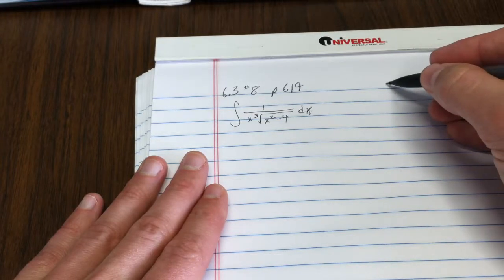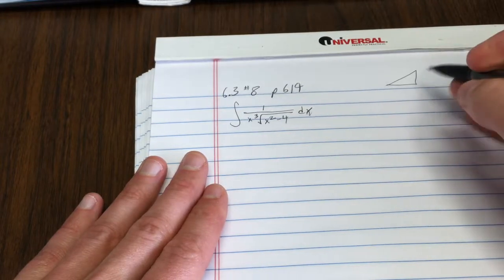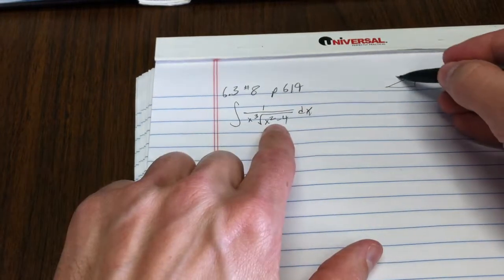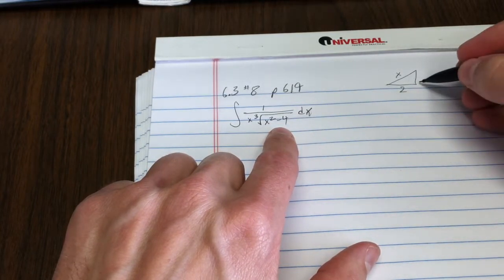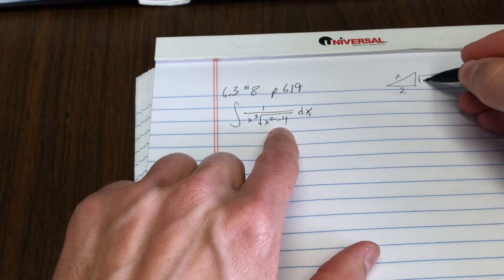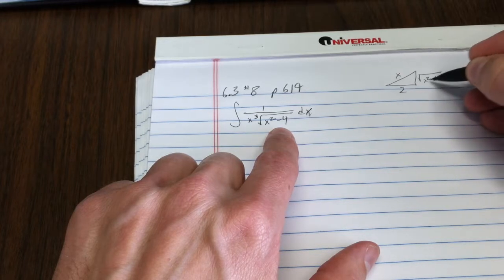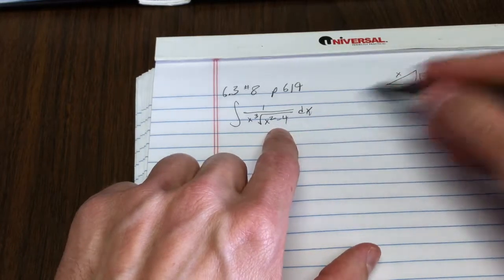the reference triangle we're going to be working on is going to have the hypotenuse be x, this side be 2, and notice you could work out using the Pythagorean theorem that this side would be the square root of x squared minus 4.